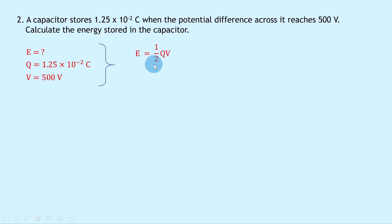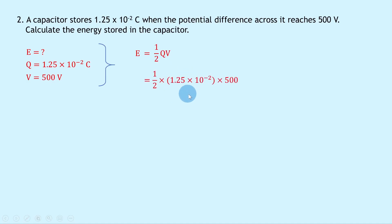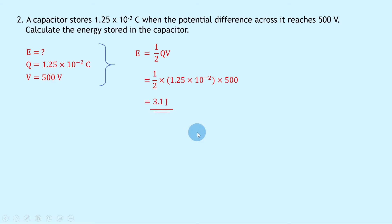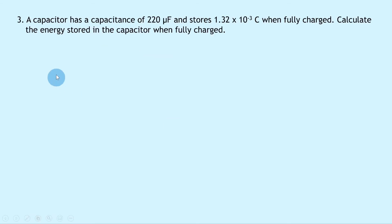Writing down our energy equation relating charge and potential difference for a capacitor, we have E equals a half QV. Substituting in the numbers gives us a half times 1.25 times 10 to the minus 2 times 500. Putting that into your calculator should give you a final answer of 3.1 joules.